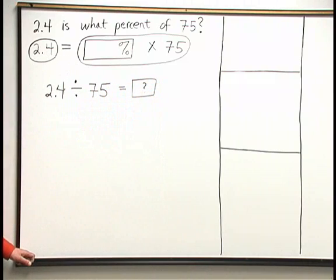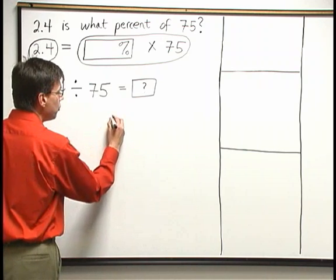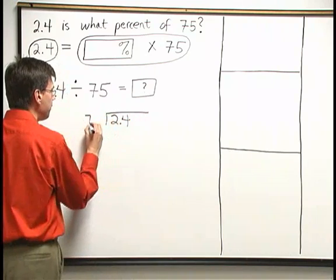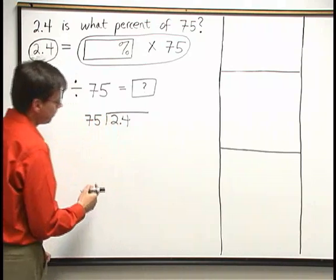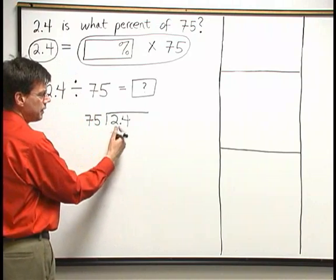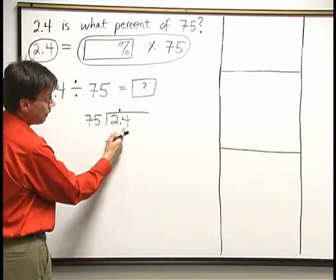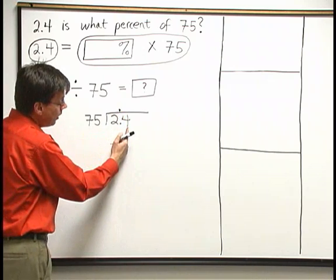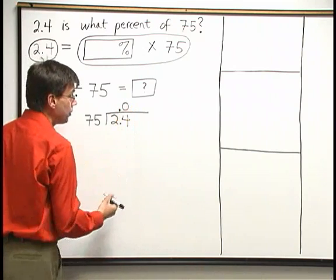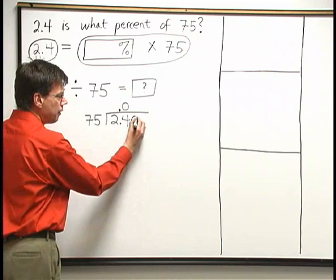Now because I'm dividing with a decimal, I'll go ahead and do decimal long division. 2.4 divided by 75. Now 75 doesn't go into 2, and then I get to my decimal point, so I need to write the decimal up above. 75 doesn't go into 24 either. And because I'm to the right of the decimal point, I need to write a 0 to the right of the decimal point in the answer.